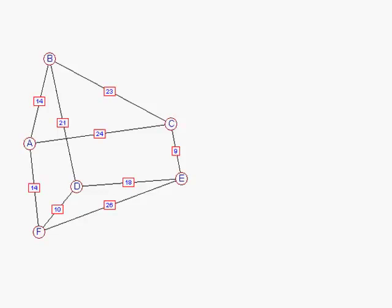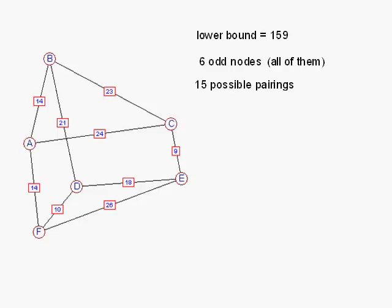Let's look at something which is approaching getting a little bit more difficult. In this case, the total weight of all the arcs is 159, so that's our lower bound. But look, there are six odd nodes, and so we're not going to get away with 159 on this. In fact, all of the nodes are odd. All of them have order three. That means there are 15 possible pairings. In theory, we should work through all 15 possible pairings and see which one gives us a combination of three of minimum weight.